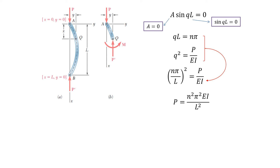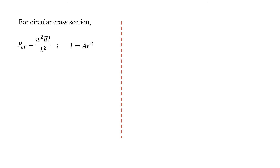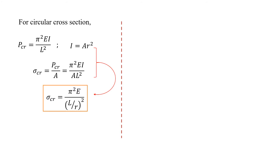Rearranging the equations, we get P equals n²π²EI over L². Taking the smallest value where n equals 1, the critical load for this model is PCR equals π²EI over L². For a circular cross-section, the moment of inertia equals area multiplied by r², where r is the radius of gyration. Since critical stress equals the critical load divided by area, combining all equations gives critical stress equals π²E divided by (L/r)², where L/r is the slenderness ratio.